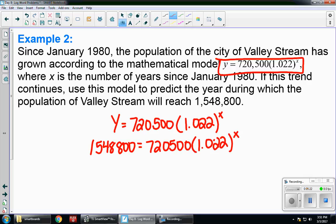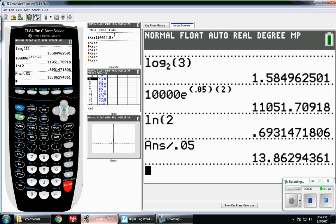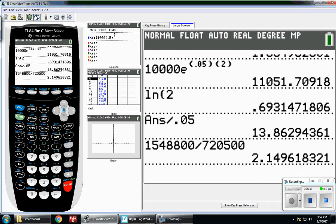So just like in the last problem, I want to isolate the base. So my first step is going to be to divide by the 720,500. So in my calculator, here I go. 1,548,800 divided by 720,500. And I get this really long decimal.